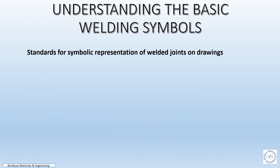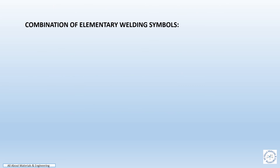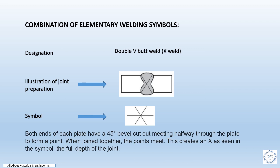The basic weld symbols for combination of elementary welding — for a symmetrical weld made from both sides. Examples used by EN ISO 2553:2014 are shown. Now we will see the combination of elementary welding symbols for double V. The sketch illustrates the joint preparation and the symbol to be represented in the drawing. Both ends of the plate have a 45 degree bevel cut meeting halfway through the plate to form a single point, creating an X for the full depth of the joint.